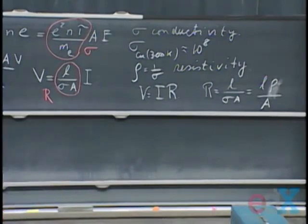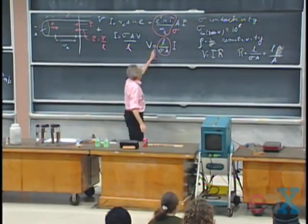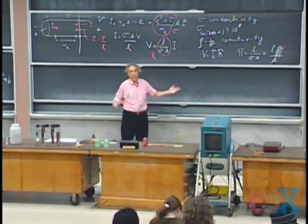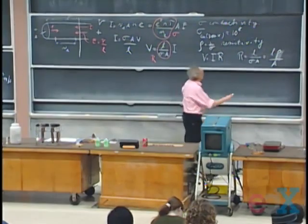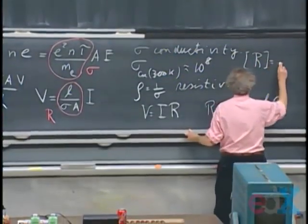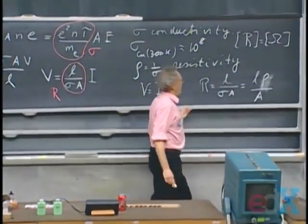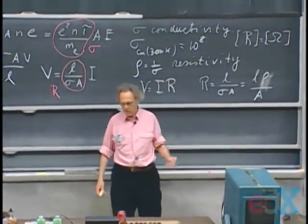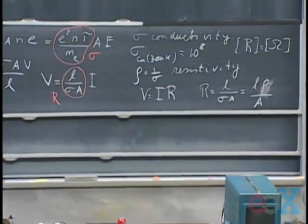The unit for resistance R is volts per ampere, but we call that Ohm. And so the unit for R is Ohm. And so if you want to know what the unit for rho and sigma is, that follows immediately from the equations, the unit for rho is then Ohm meters.